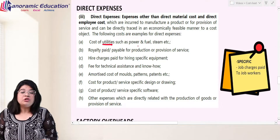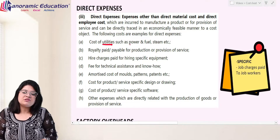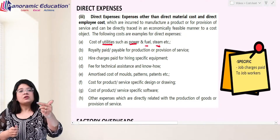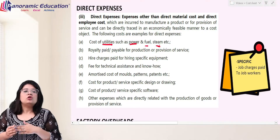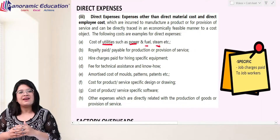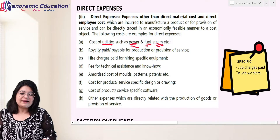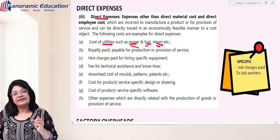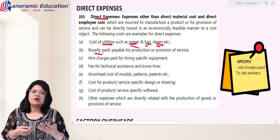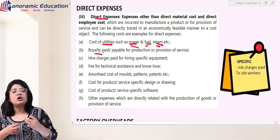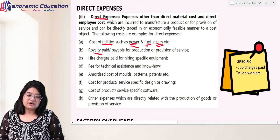Cost of utilities — utilities meaning the basic requirements — and the examples given are power, fuel, and steam. Students often classify these under factory overheads, but according to the institute, power, fuel, and steam are basically a part of direct expense. Then we talk about royalty. Royalty is a basic example of direct expense — whatever royalty we pay regarding production or regarding the product is a direct expense.